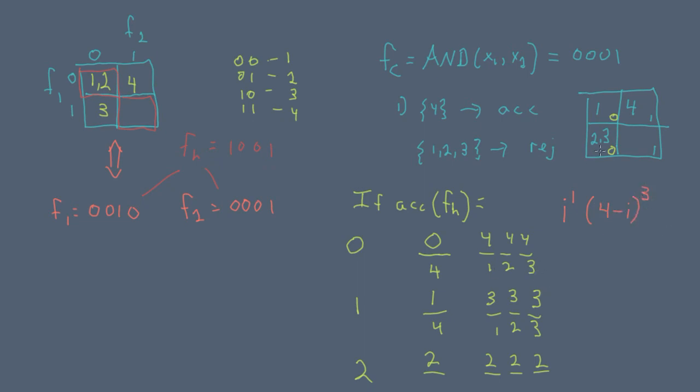We can further generalize by noting that one and three do not depend on the specific accept state of AND, but merely the number of states that AND accepts, in this case one. So if we denote by the number of accept states of our composite function,